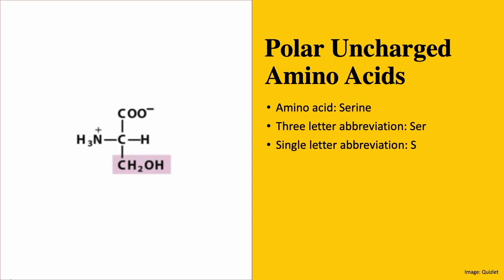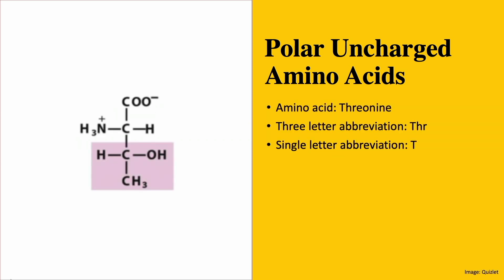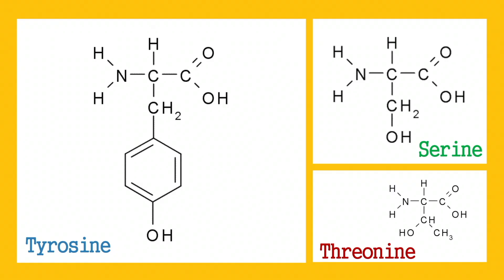Now let's look at the structures more closely. Serine: the R-group of serine has one carbon atom attached to the alpha carbon, and that R-group carbon atom has two hydrogen atoms and a hydroxyl group. Once you memorize this, it becomes easy to remember the structure of threonine. Threonine also has an OH group — that's why we put it in the first box. You get the structure of threonine when you add a methyl group to the end of the R-group of serine.